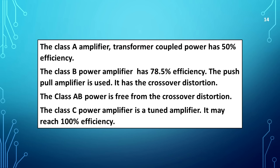The class A amplifier with transformer coupled power has 50% efficiency. The class B power amplifier has 78.5% efficiency and the push-pull amplifier is used, but it has crossover distortion. The class AB power amplifier is free from crossover distortion. The class C power amplifier is a tuned amplifier and may reach 100% efficiency.